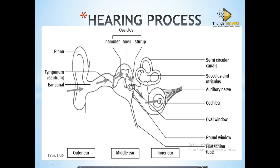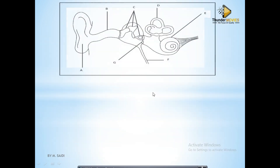The excess pressure in the inner ear is absorbed by the round window. The Eustachian tube helps in equalizing pressure on either side of the tympanic membrane. As long as you know the part and function of each structure, you will be able to describe the hearing process.